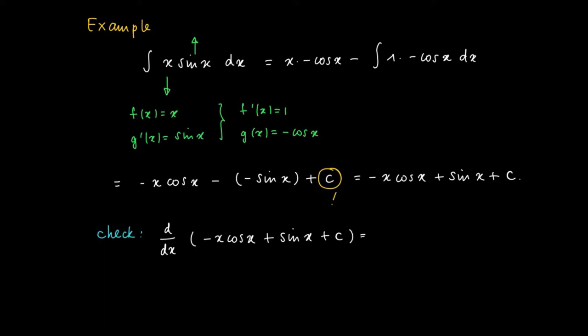Well, the C has derivative 0, of course. We use the product rule to find minus cosine of x minus x times minus sine of x as a derivative of minus x times cosine of x.